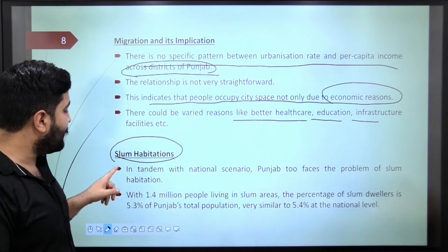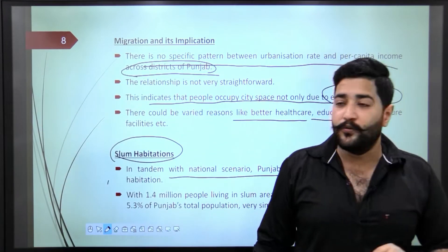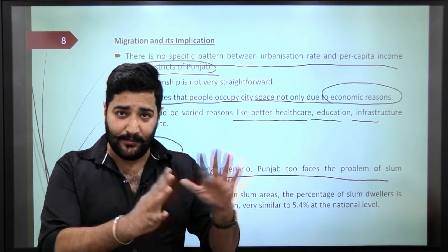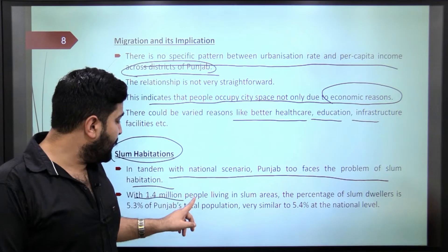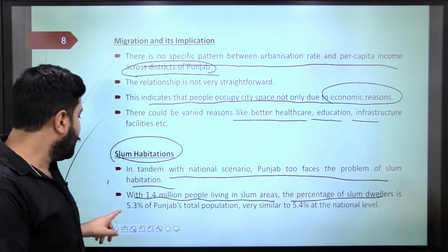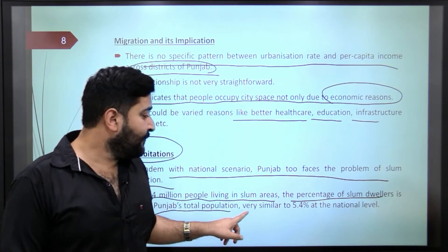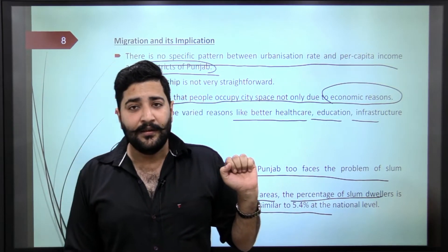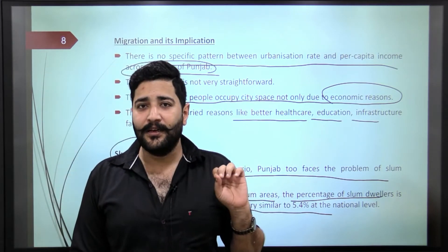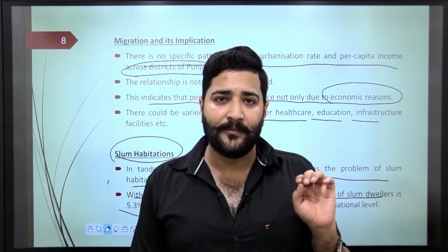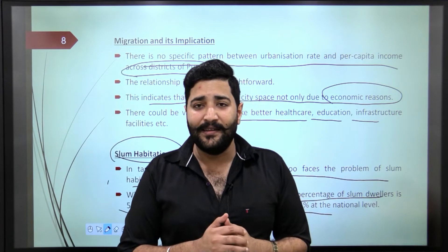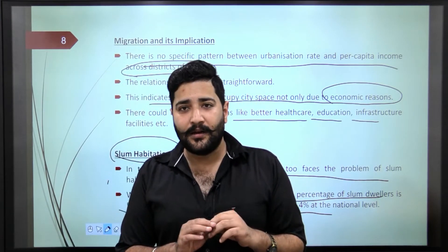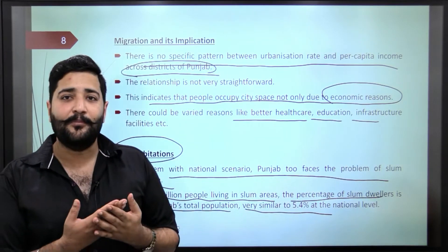In tandem with the national scenario, Punjab also faces the problem of slum habitation in cities. With 1.4 million living in slum areas, the percentage of slum dwellers is 5.3% of Punjab's total population — very similar to 5.4% at the national level. That is unfortunate because slum dwellers lack even basic facilities. Does anybody know how we define a 'slum' in this country? Please comment your answer or doubt.